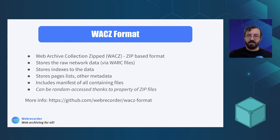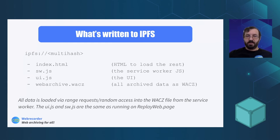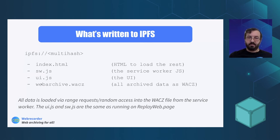A key property of this format is that since it's a zip file it can be randomly accessed, meaning even if you have a large archive you don't have to load everything all at once — that's a key requirement for this to work. What's actually written to IPFS is four files: the index, a service worker sw.js, a UI file ui.js, and the actual archive in WAXY format. What I just shared in the channel is a link to the multi-hash that was created directly in the browser.